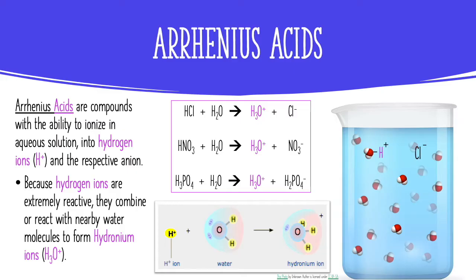You can get another picture of what this might look like down here, where it shows a hydrogen ion combining with a water molecule to form that hydronium ion. And I have a few examples of substances that will dissociate in water to form these hydronium ions and an anion.